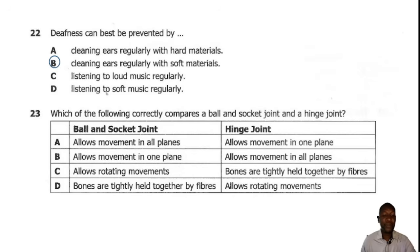Question 23. Which of the following correctly compares a ball and socket joint and a hinge joint? The ball and socket joint moves in all planes and the hinge joint moves in one plane only. So the correct answer is A.